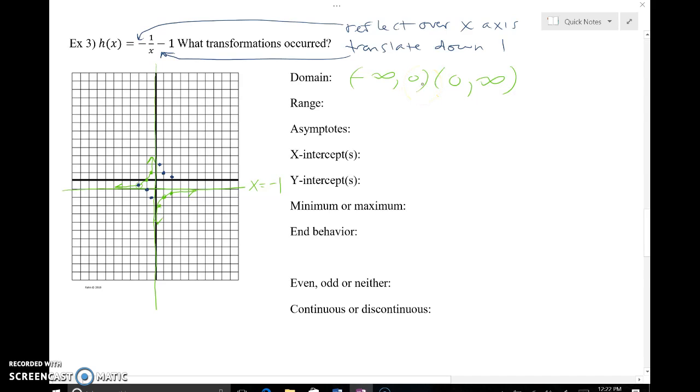My range seems to be everything good except for when – I've got a small error here. It's y equals negative one. So my y values can't be negative one, so my range is fine from negative infinity up to negative one, and then from negative one up to positive infinity.